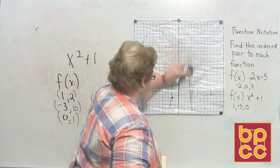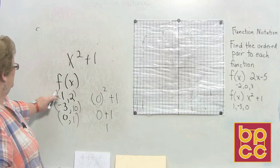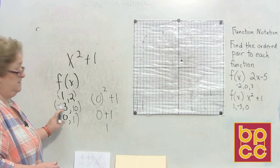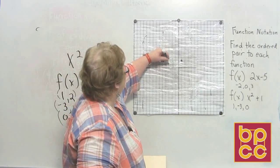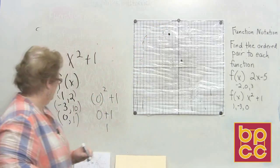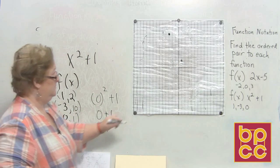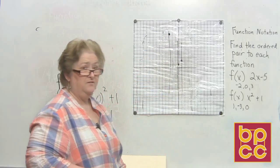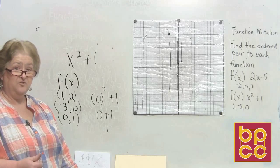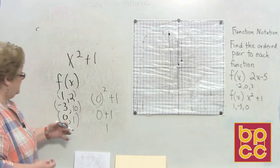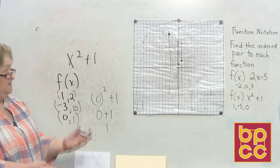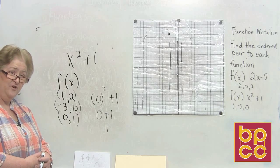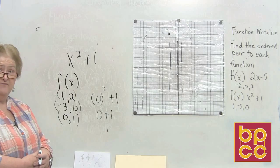So we're going to plot each of these ordered pairs and we should have ourselves a function. The first one is (1, 2) — go over 1 and up 2. Our next one is (-3, 10). And our third one is (0, 1) — 0 up 1. As I draw my vertical lines, we've only used X one time on each of those vertical lines. So we've subbed in, we've graphed it, and we have found that this is a function. This is what we talk about when we talk about functions — determining if we have a function or solving for when they tell us what F of X is. Good job.